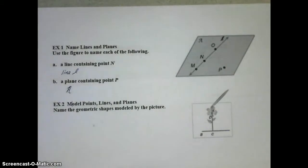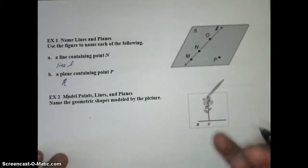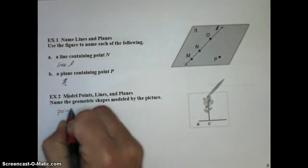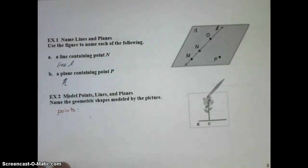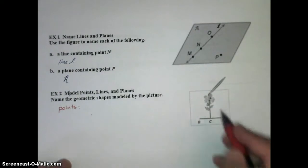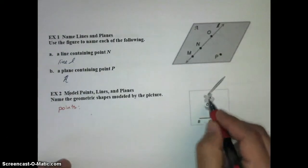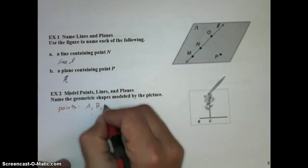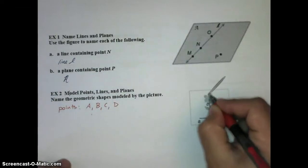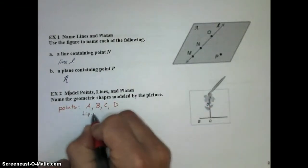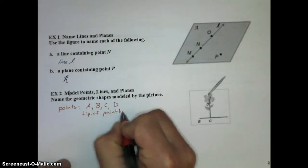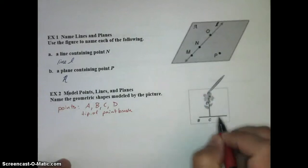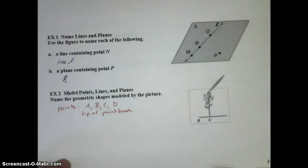In example two, we are to name the geometric shapes modeled by this picture, and we're referring to points, lines, and planes. Let's talk about points first. We have points A, B, C, and D. All those points, parts of the flower, parts of the ground, are our points. The tip of the paintbrush is also a point. Even though we don't label it, we could assume that that maybe is touching point A there. But the tip of the paintbrush is an example of what a point would be.